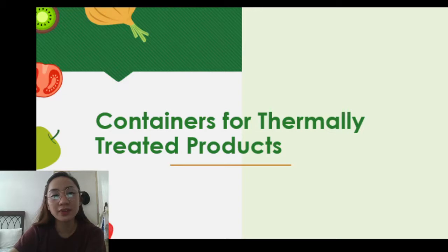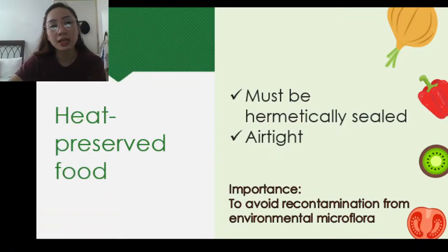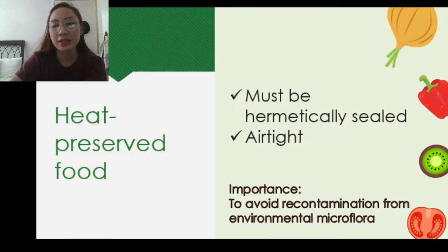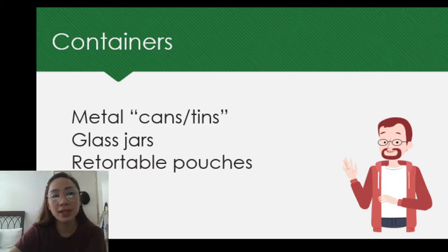We have different containers for thermally treated products. For heat-preserved food, the container must be hermetically sealed and airtight. The importance of this requirement is to avoid recontamination from environmental microflora. The containers we have are: metal cans or tins, glass jars, and retortable pouches.